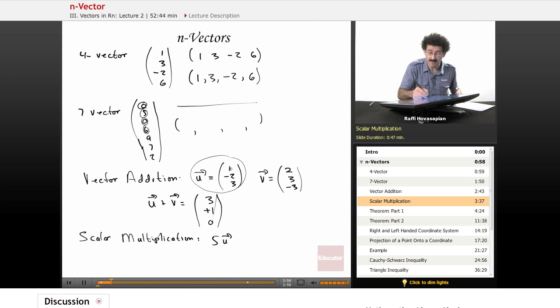Five times one is five. Five times negative two is negative 10. Five times three is 15. So 5U equals, and it's again, it's a three vector. Nothing changes. We have 5, negative 10, and 15. So vector addition, scalar multiplication, just like when we did it for vectors in the plane, you just have more numbers.